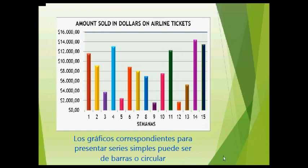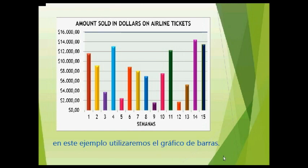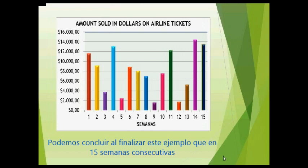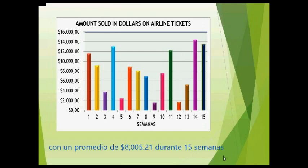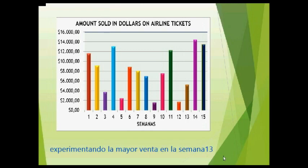The corresponding graph to represent simple series could be a bar graph or a circular graph. For this example, we are going to use a bar graph. So we can conclude that in 15 consecutive weeks, the airline sold $120,078.14, with an average of $8,005.21 during the 15 weeks, experiencing the most sales in the 13th week and the fewest number of sales in the 9th week.